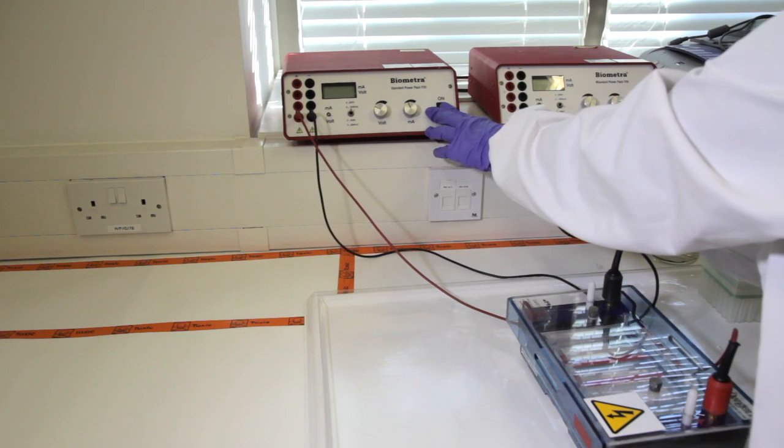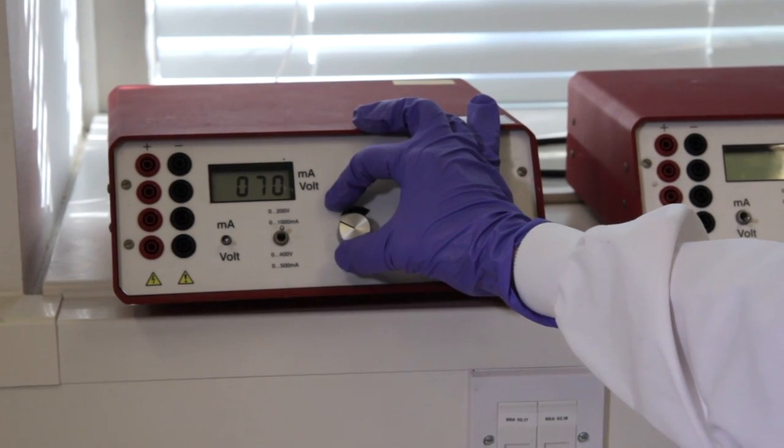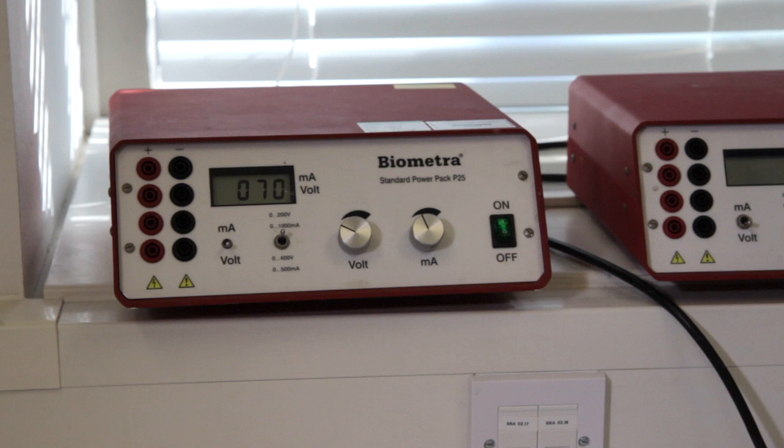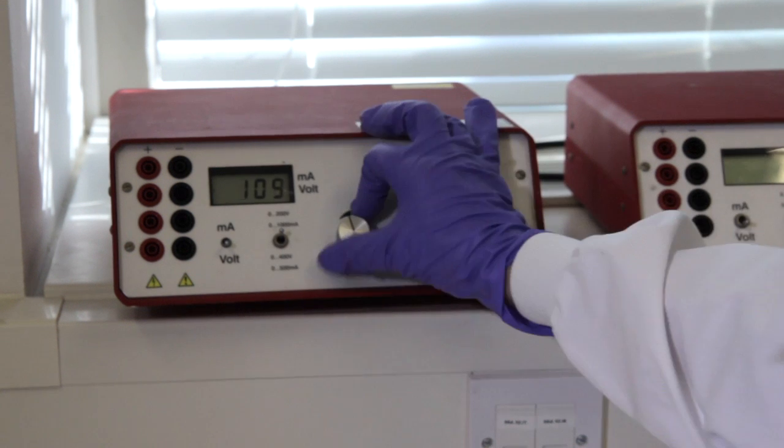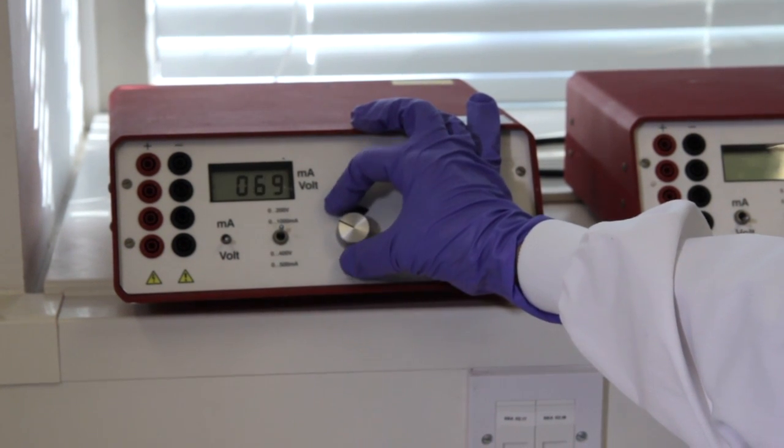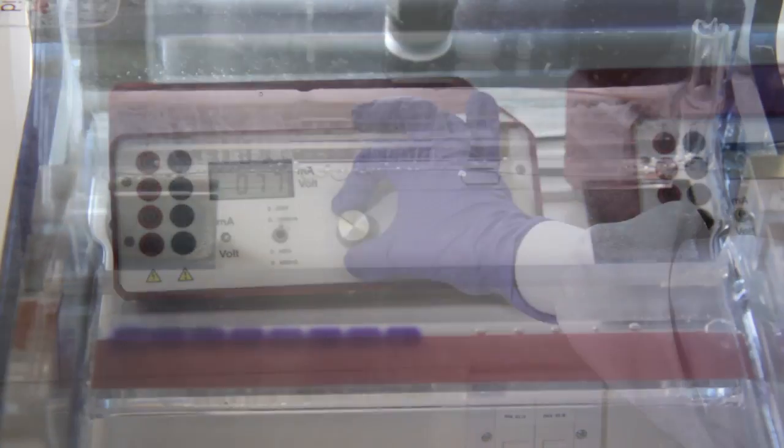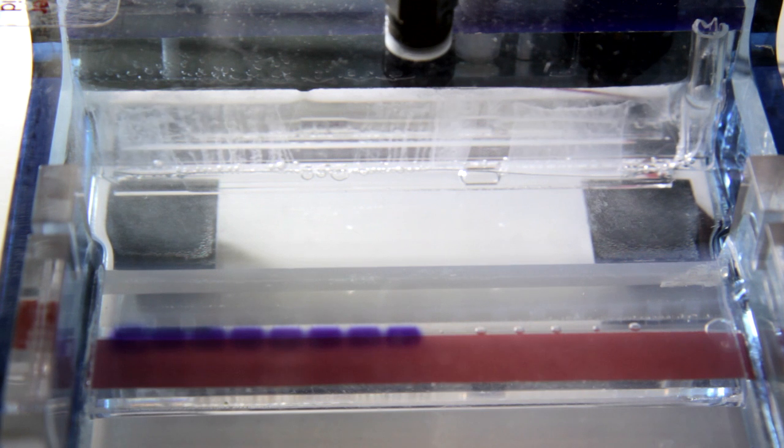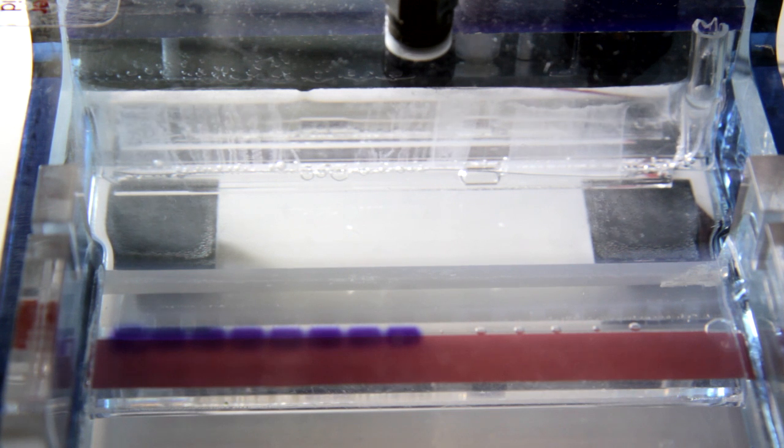Turn on the power supply and set the voltage. Small gels run typically at 50-70 volts. Larger gels can be run at 80-100 volts. You can check the current by changing the volt amp switch to amp. There can be voltage but no current if there is a break in the circuit. Current is typically around half the voltage if your buffer concentration is correct.